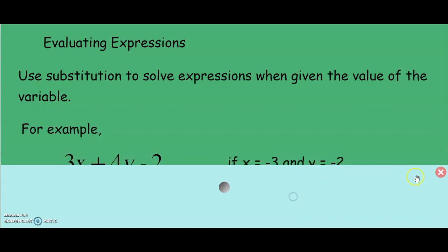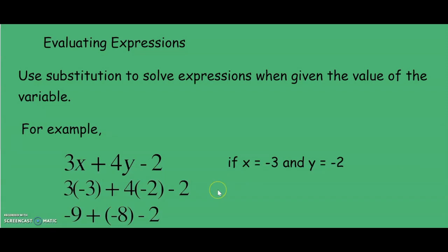For example, 3x plus 4y minus 2 if x equals negative 3 and y equals negative 2. We start by using substitution to replace each variable with the value we were given. So x equals negative 3 and y equals negative 2. Remember, when you have a number next to a variable, that means you will multiply. These parentheses are also another symbol for multiplication.